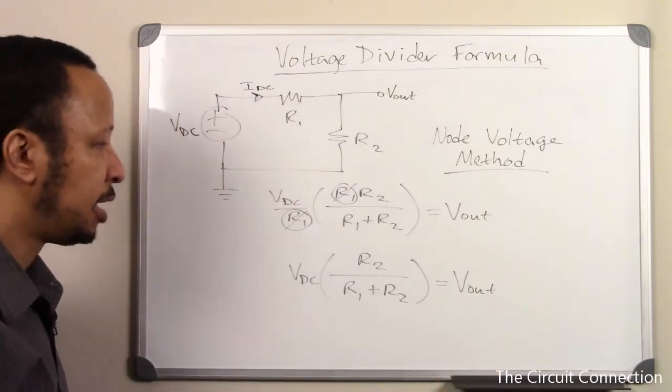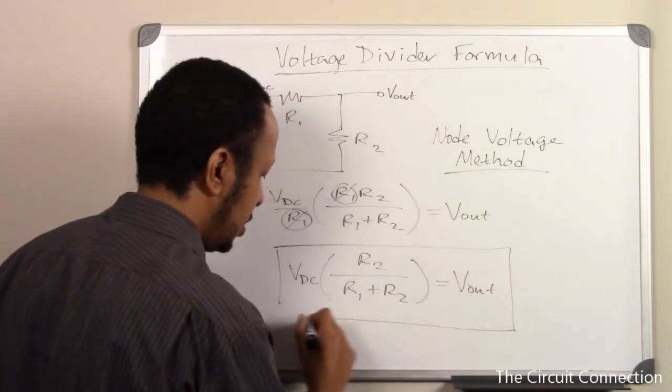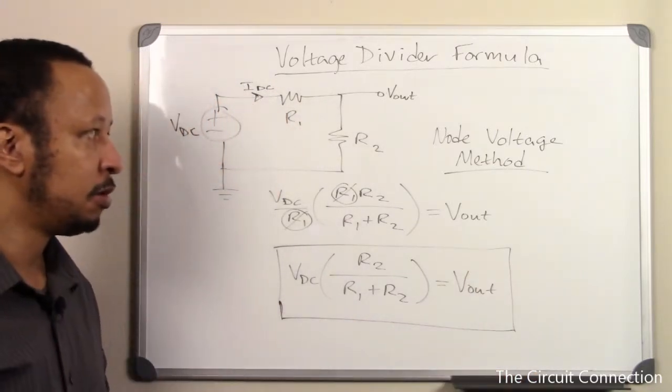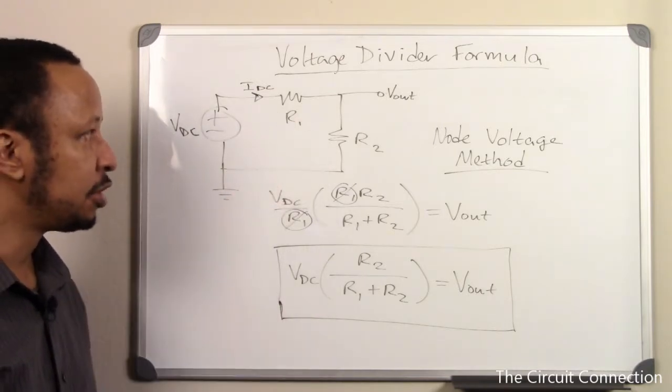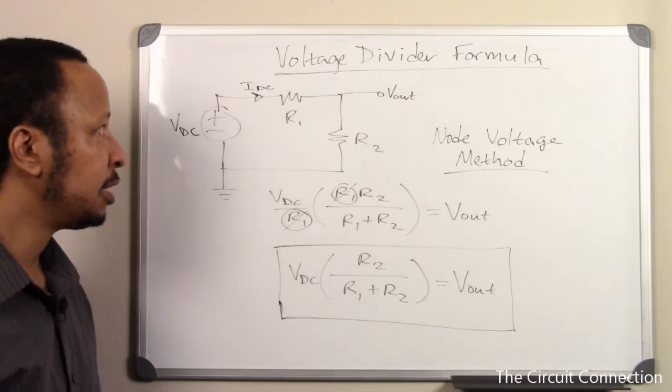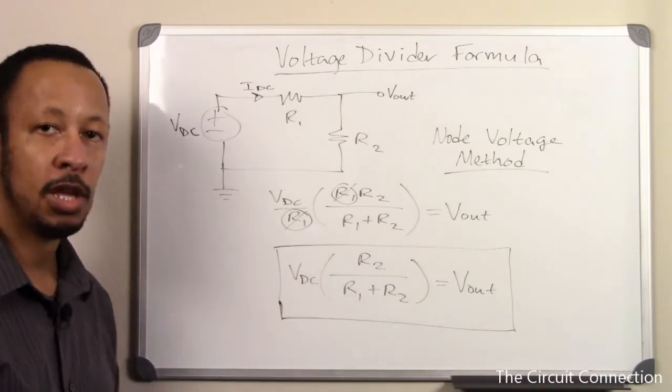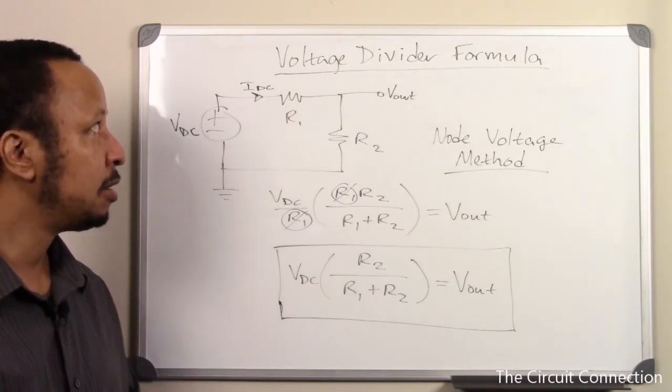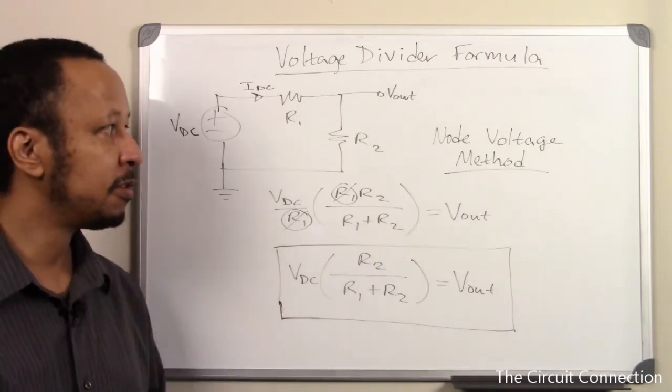So that is our voltage divider formula that we will use many times when we're doing other circuit problems. But as soon as we see this situation and we want to know what Vout is, then we can automatically use this formula to get Vout. So that brings us to the end of our topic here on voltage divider formula derivation through the node voltage method.